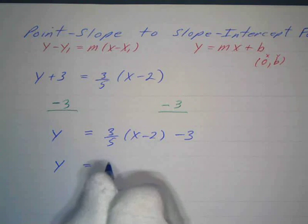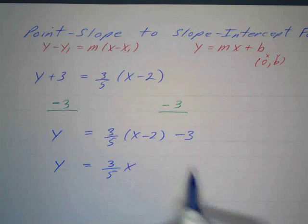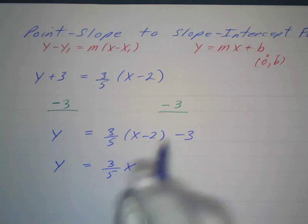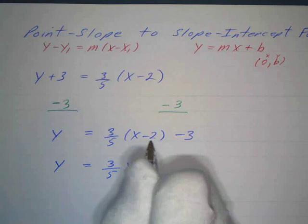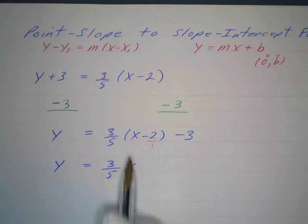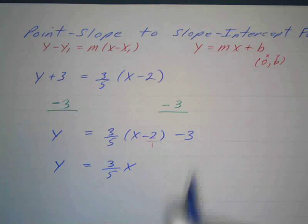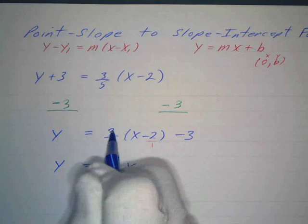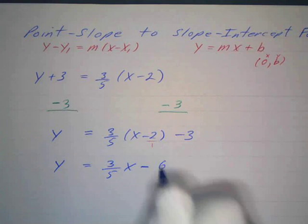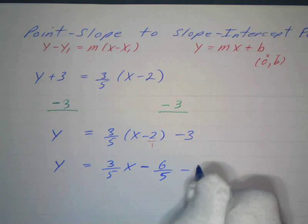3 fifths times x is just 3 fifths x. And then 3 fifths times 2—well, 2 is the same thing as 2 over 1, it's a fraction. So this is like numerator times numerator, denominator times denominator, so that's going to be 3 times 2. First of all, my sign is negative—positive times a negative is a negative. 3 times 2 is 6, and 5 times 1 is 5, minus 3.